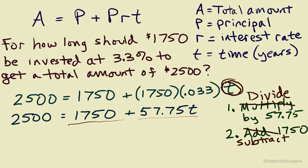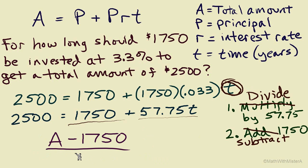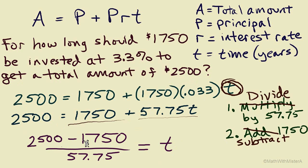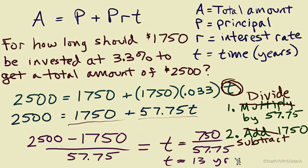Just as before, we can write a formula solved for T. The steps are: take the final amount, subtract 1,750, and divide by 57.75. This formula shows exactly the undoing steps — subtract, then divide. Substituting $2,500 in place of A: 2,500 minus 1,750 equals 750, then 750 divided by 57.75 gives the same answer, approximately 13 years, with the same 12.987 on the calculator. As long as we identify the operations in the formula — multiply and then add — we solve for T by applying the opposite operations.